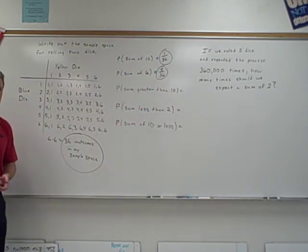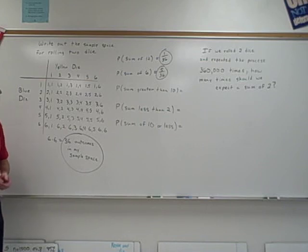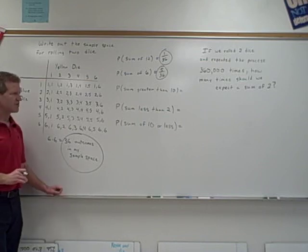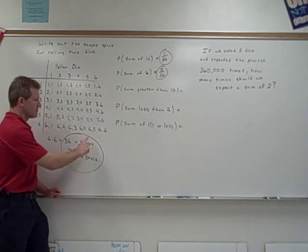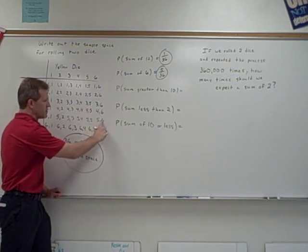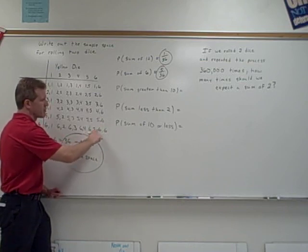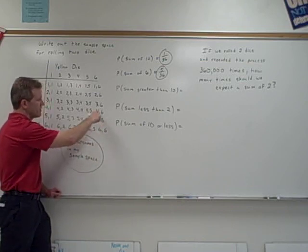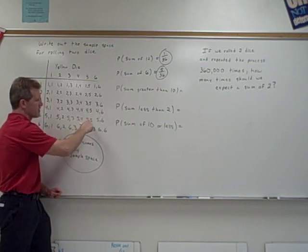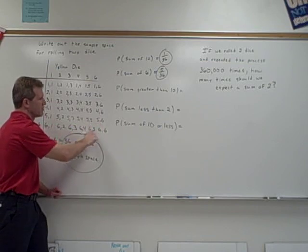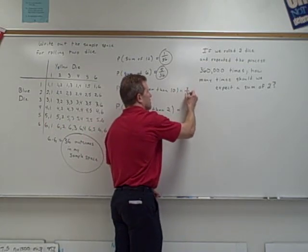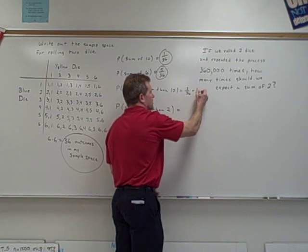Any questions about that? Okay. Sum greater than 10. How many ways do I have to do a sum greater than 10? Three. Three, yeah. Right here, six plus five is 11. Five plus six is 11. Six plus six is 12. So those three ways give a sum greater than 10. These three ways equal 10, right? Four, six, five, five, six, four. So I wouldn't want to use those because it says greater than 10. So one, two, three out of 36, which of course you can reduce to one twelfth if you wanted to.